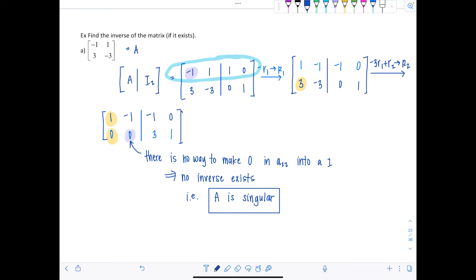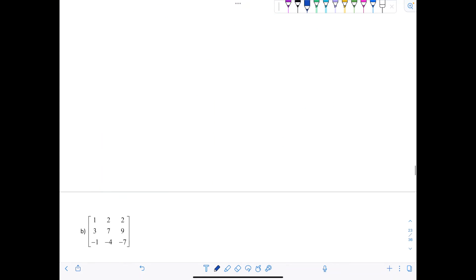I've got another example for you where we will be successful. I already spilled the beans. We'll find an inverse. But look how spicy, it's a three by three. So we're going to call this matrix A. And so to start off, you adjoin matrix A with the identity matrix, this time of order three.